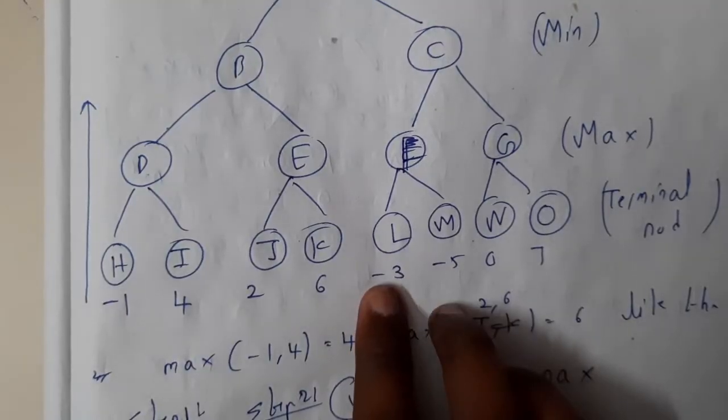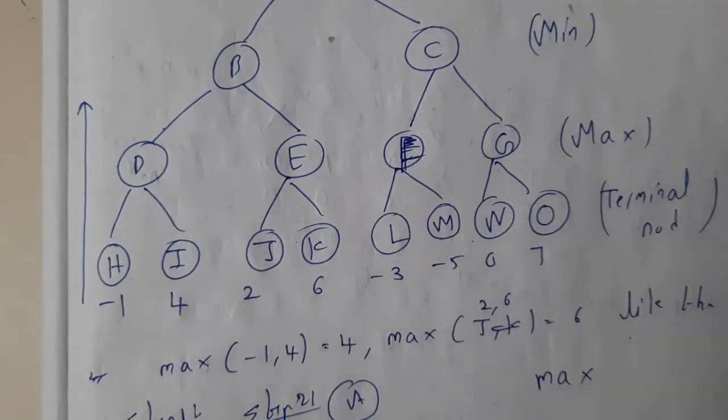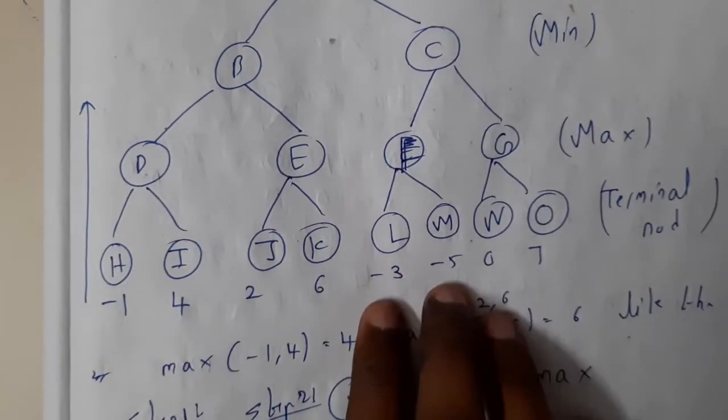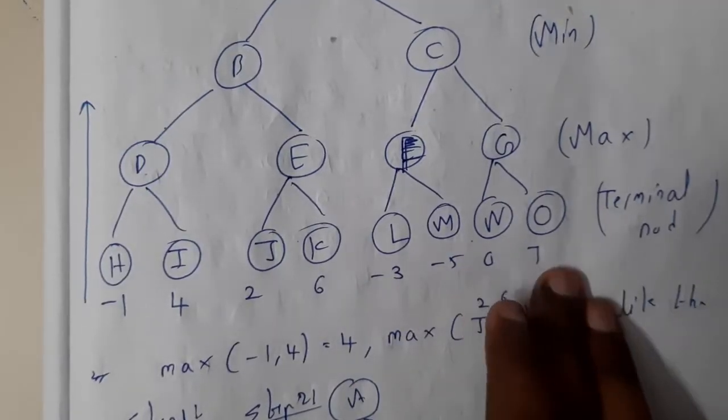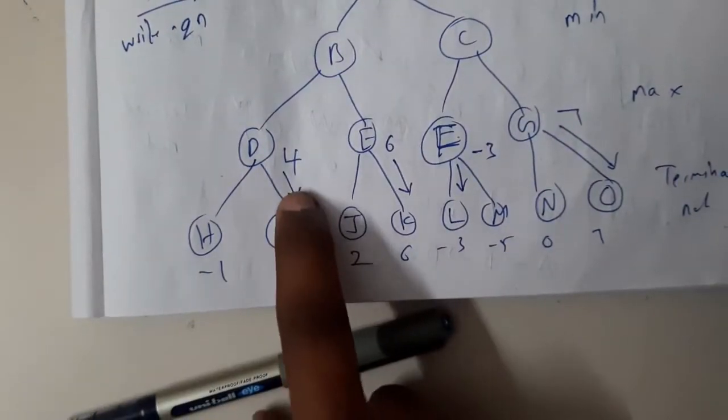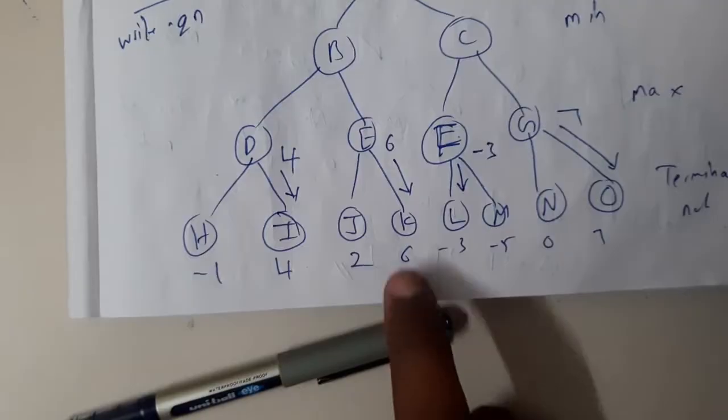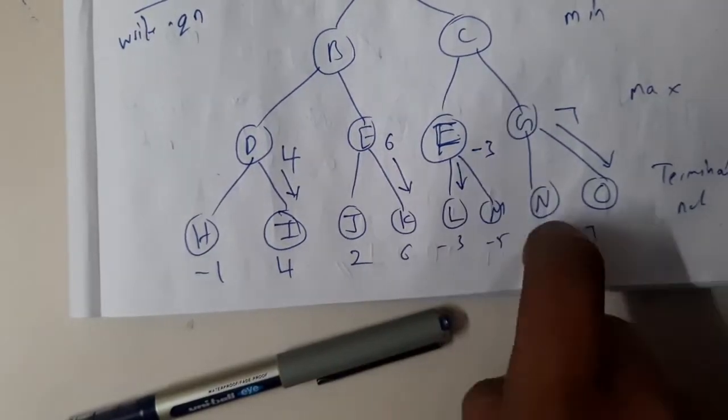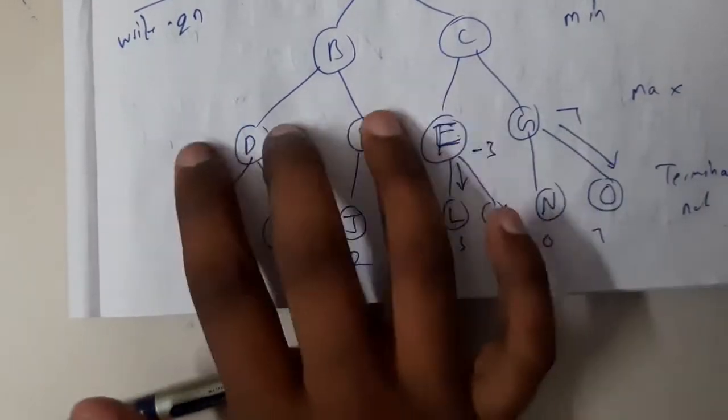From these two which is maximum, seven. In the first step you'll be calculating them and taking those values to the above layer. You'll be drawing an arrow in the downward direction, so four came here, six came here, minus three came here, seven came here. Now from these values you'll be taking the minimum values - min of four and six, min of minus three and seven.